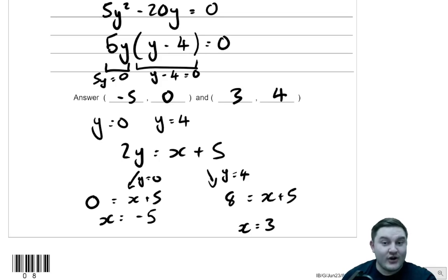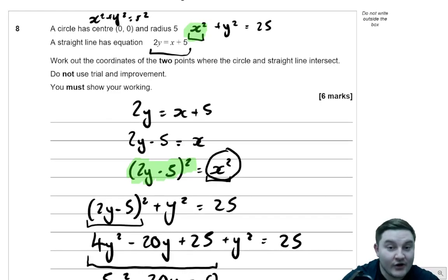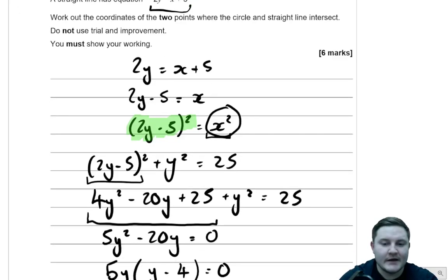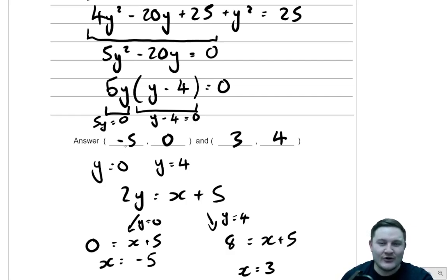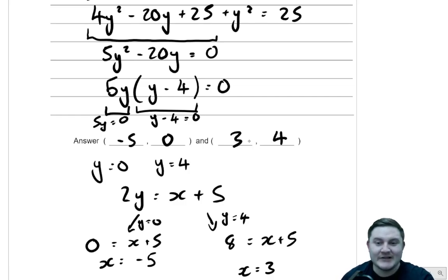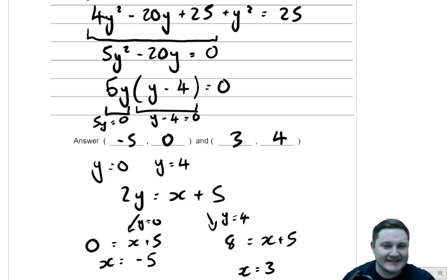Just before talking through an alternate method — how could we check? We sub into the circle equation x squared plus y squared equals 25. Minus 5 squared is 25, plus 0 squared is 0, giving 25 — that works. And 3 squared is 9, plus 4 squared is 16, equals 25. That's actually the 3, 4, 5 right-angle triangle, and I always love when Pythagoras' theorem comes up in unusual places.